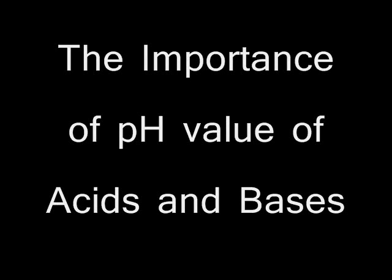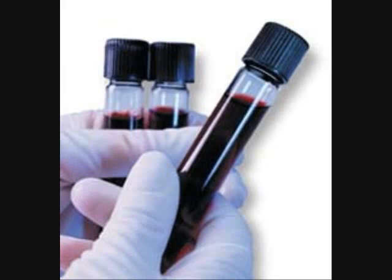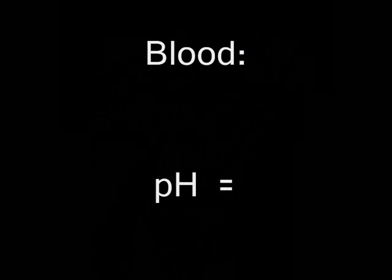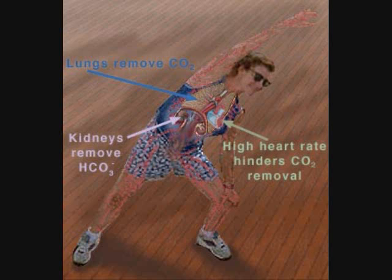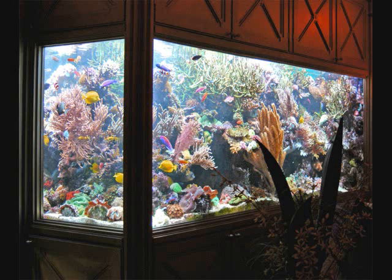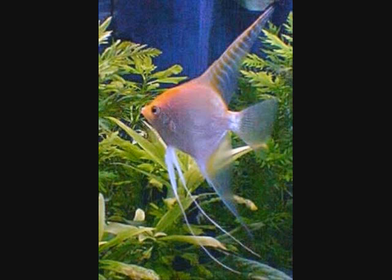It is necessary to know and maintain the pH value of many solutions and substances. For example, blood has a pH value that normally falls between 7.35 and 7.45. The kidneys and lungs work naturally together to regulate the pH level of blood. The pH of water used in aquariums for pet fish depends on the fish that are living there. Some saltwater creatures thrive in water that has a higher pH, around 8 or above, while freshwater fish do better in the range of 5.5 to 7.5.